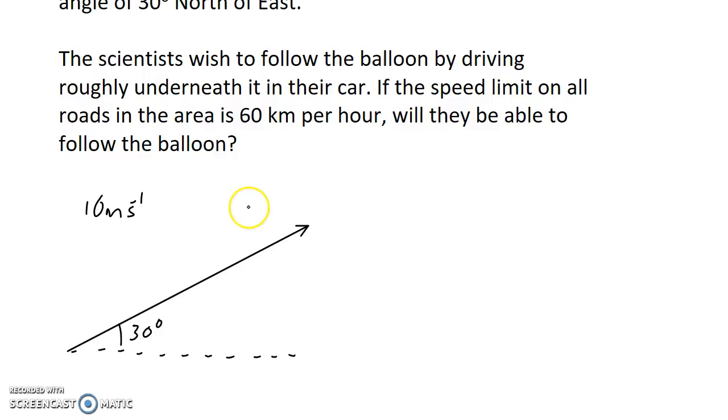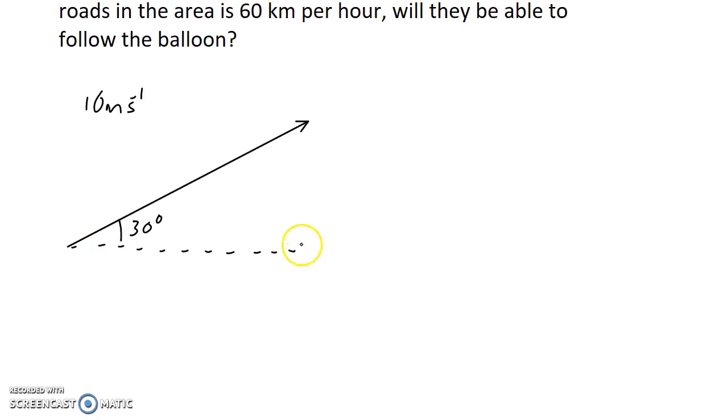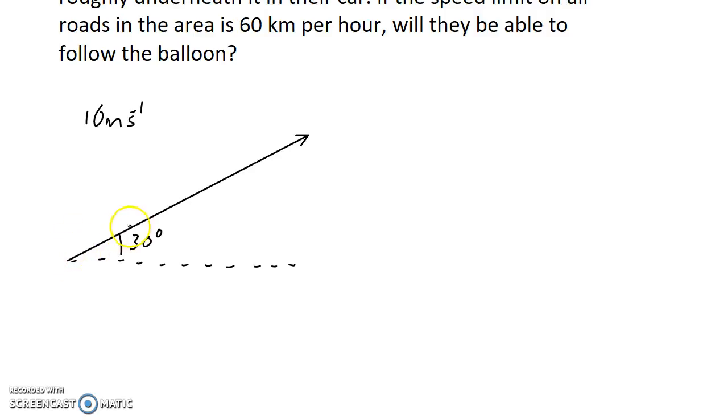The first instinct might be to break 10 meters per second up into a horizontal and a vertical component. But if you did that, what you would get is the scientists traveling along the horizontal road at the same rate that the balloon is traveling east, which means that the balloon might be here and the scientists in their car might be here below it. By the time the balloon is here, the scientists are going to wind up too far to the south. The scientists need to make it all the way to the balloon in the same time that the balloon reaches that point. So we're not going to break this up into a horizontal and vertical component for the velocity of the balloon.